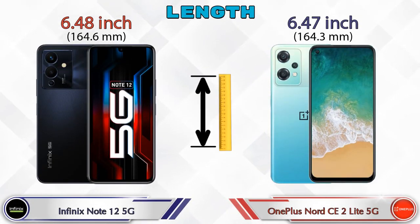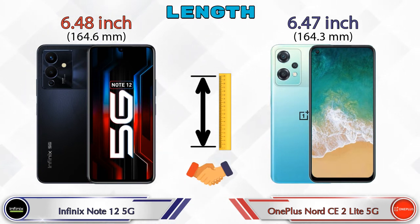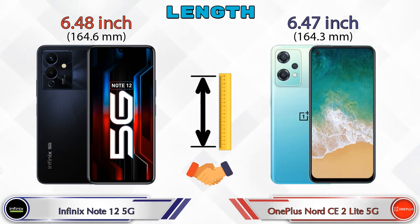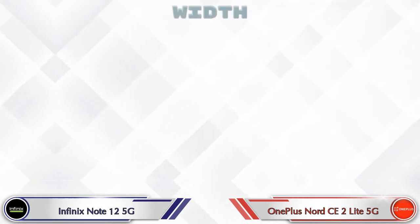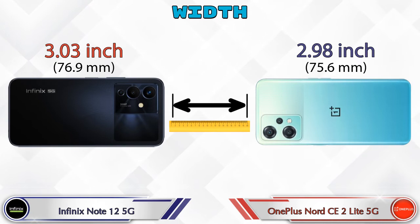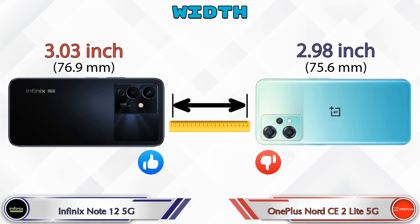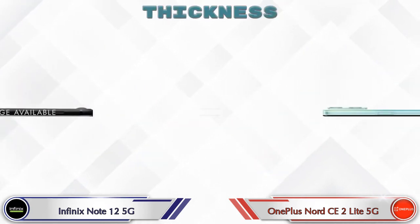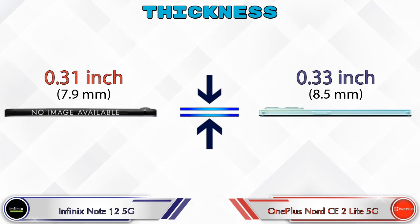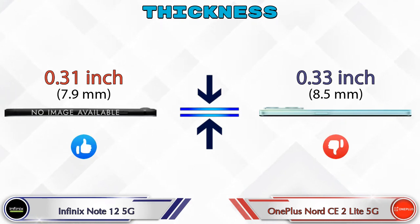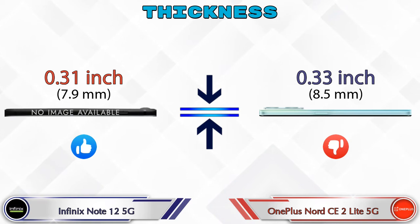Now let's check dimensions. Length: Note 12 5G is 6.48 inches and CE2 Lite 5G is 6.47 inches — almost the same. Width: Note 12 5G is 3.03 inches and CE2 Lite 5G is 2.98 inches, making the CE2 Lite slightly narrower. Thickness: Note 12 5G is 0.31 inches and CE2 Lite 5G is 0.33 inches, so the CE2 Lite is slightly thicker.